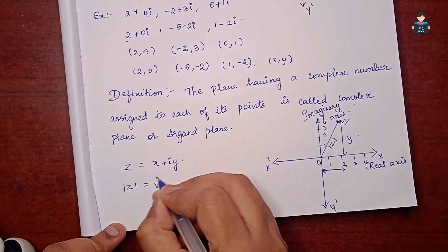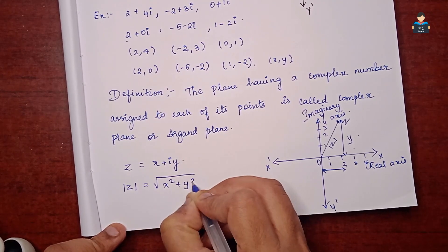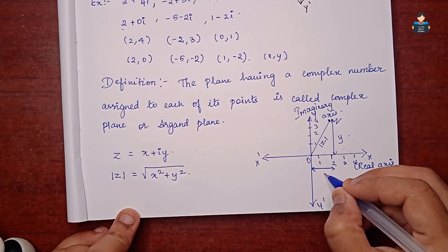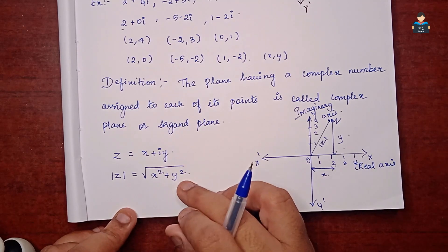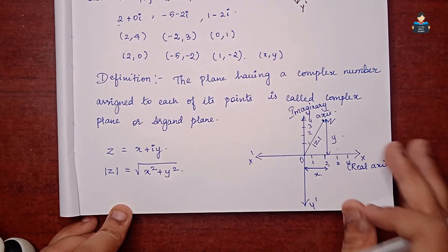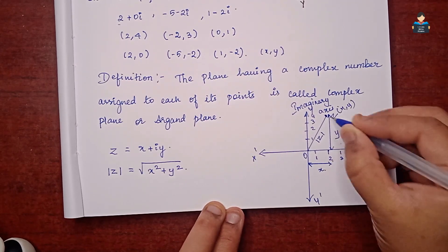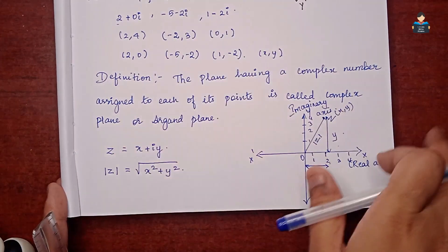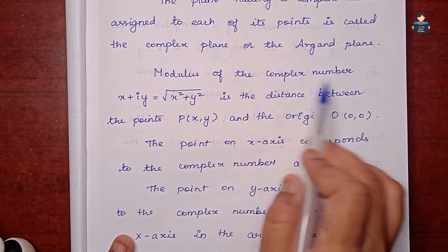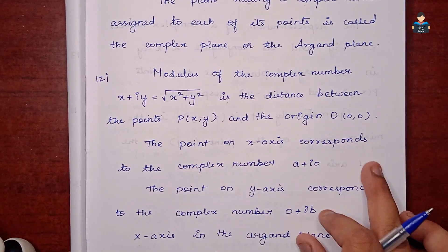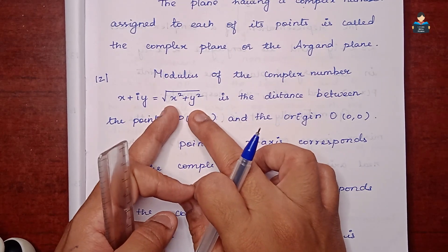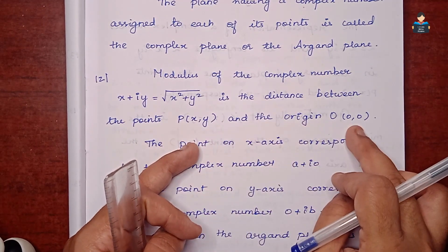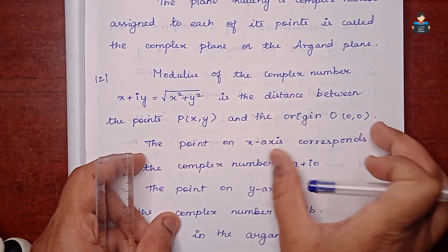Modulus of Z equals square root of x squared plus y squared. The coordinates of point Z are (x, y). The full definition: the modulus of a complex number is the distance between point P(x, y) and the origin (0, 0). The x-axis is the real axis and the y-axis is the imaginary axis on the Argand plane.